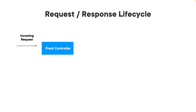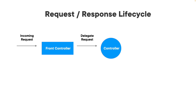The dispatcher servlet hands the request over and delegates it to one of our controllers that we've set up. The dispatcher is the router that comes in and says what controller is going to handle it — it delegates the request to that controller. That controller just routes traffic to where it's supposed to go, handling the request and handing it over to the backend.